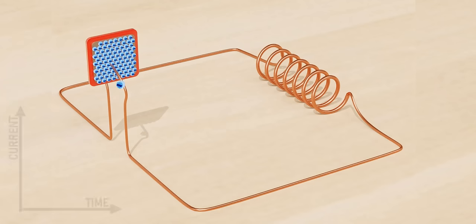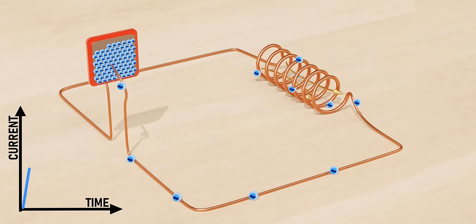Let's look at the electron flow animation once again. The current in the circuit starts from zero and gradually achieves the maximum value.